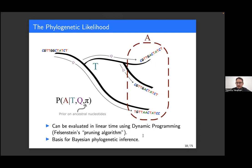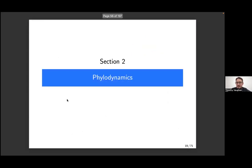In principle, all you need is this likelihood — you throw in some prior over tree space, turn the wheels of the Bayesian machinery, and get out your posterior over trees. Of course nothing is ever quite as simple as that. We'll talk about how it's done in practice later on. But before that, I'm going to jump over to talking about phylodynamics — the second part of this lecture.